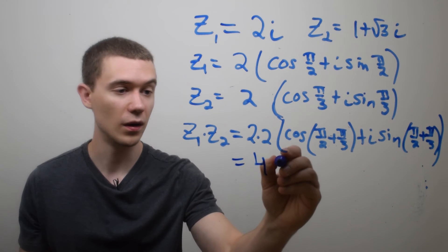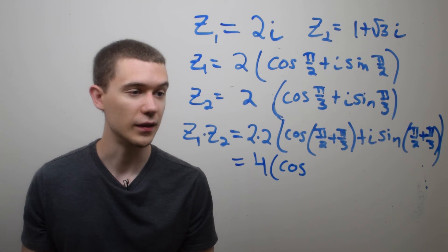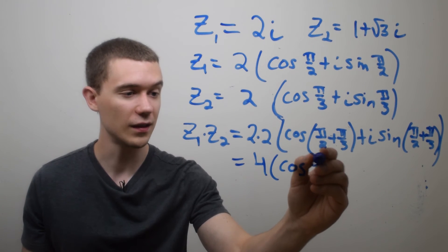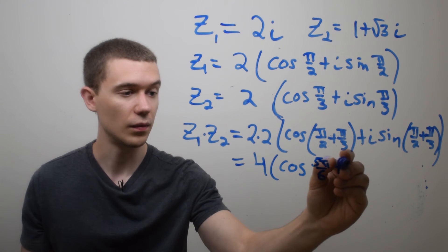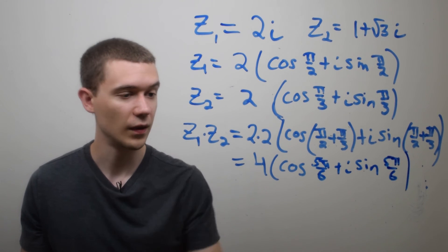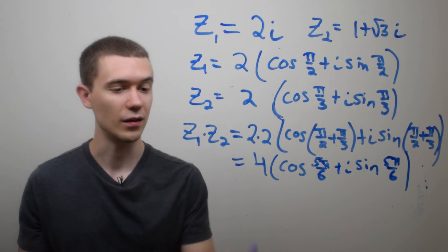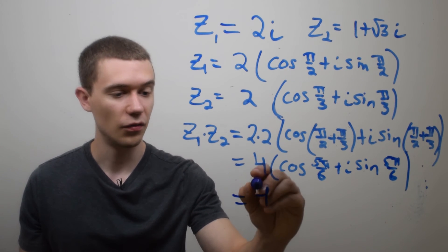So this is just going to be 4 times cosine of π/2 plus π/3 is going to be, I think, 5π/6 plus i sine of 5π/6. Check myself, 3 plus 2 is 5, yeah, looks right. And so this is then 4.